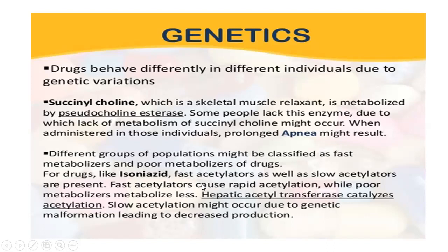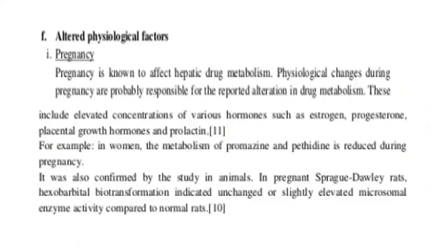In fast acetylators, the metabolism of isoniazid will be very fast, whereas in slow acetylators the rate of metabolism will be less. This is mainly due to variation in the levels of the N-acetyltransferase enzyme.